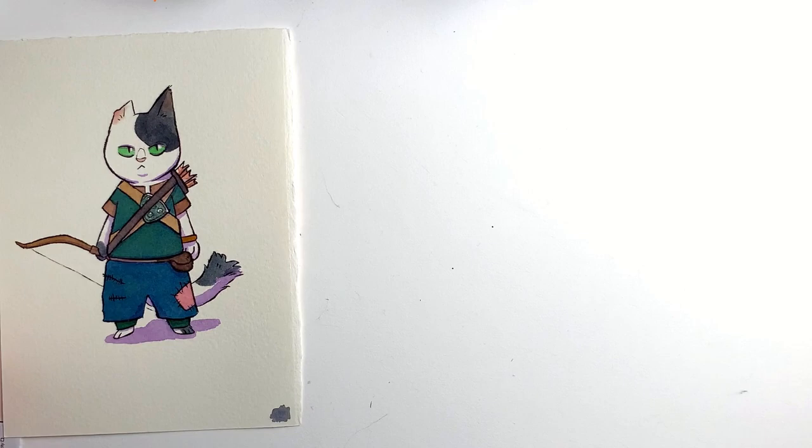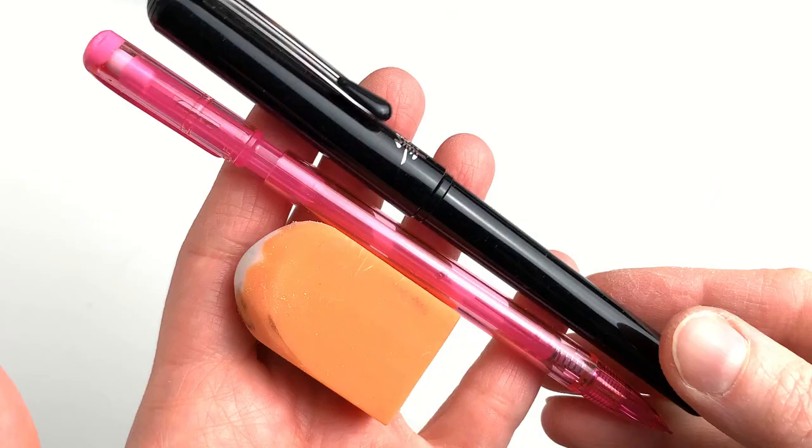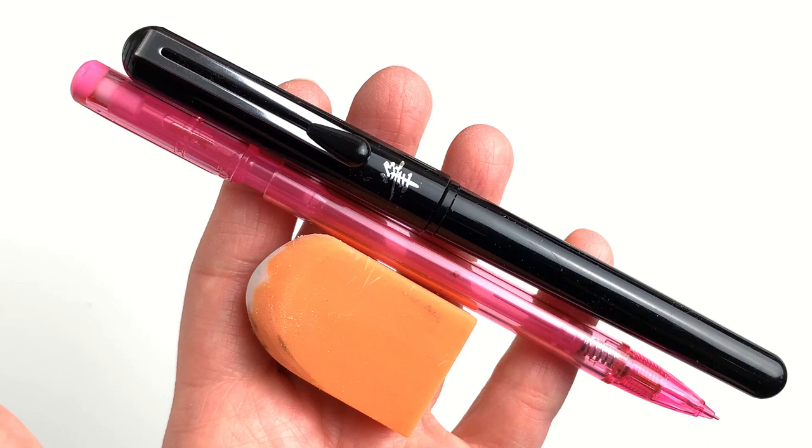Once I was done with all the swatching and testing I painted three illustrations on the provided paper. This time I made a series of three adventurer cats. I had to use some supplies not included in the box to draw my cats so I used colored lead in a mechanical pencil, an eraser and a pentel brush pen.